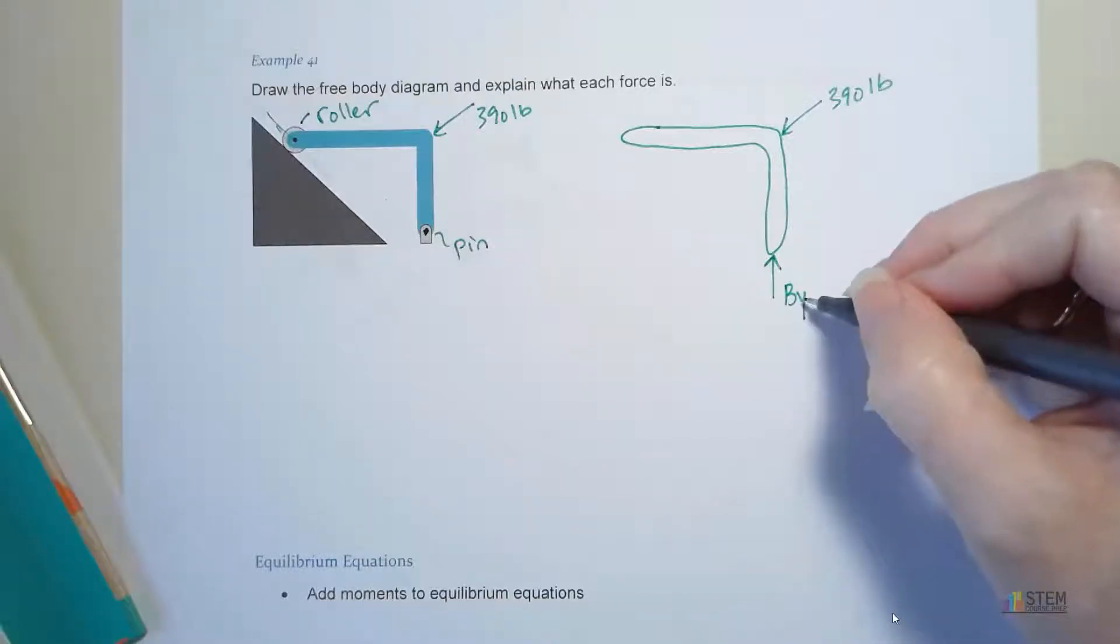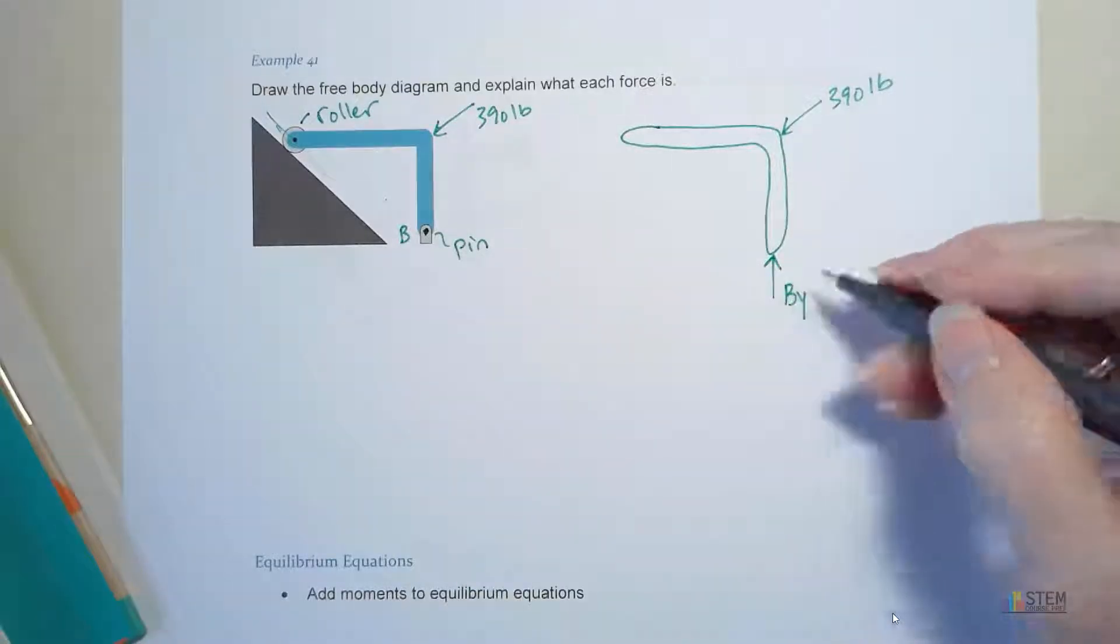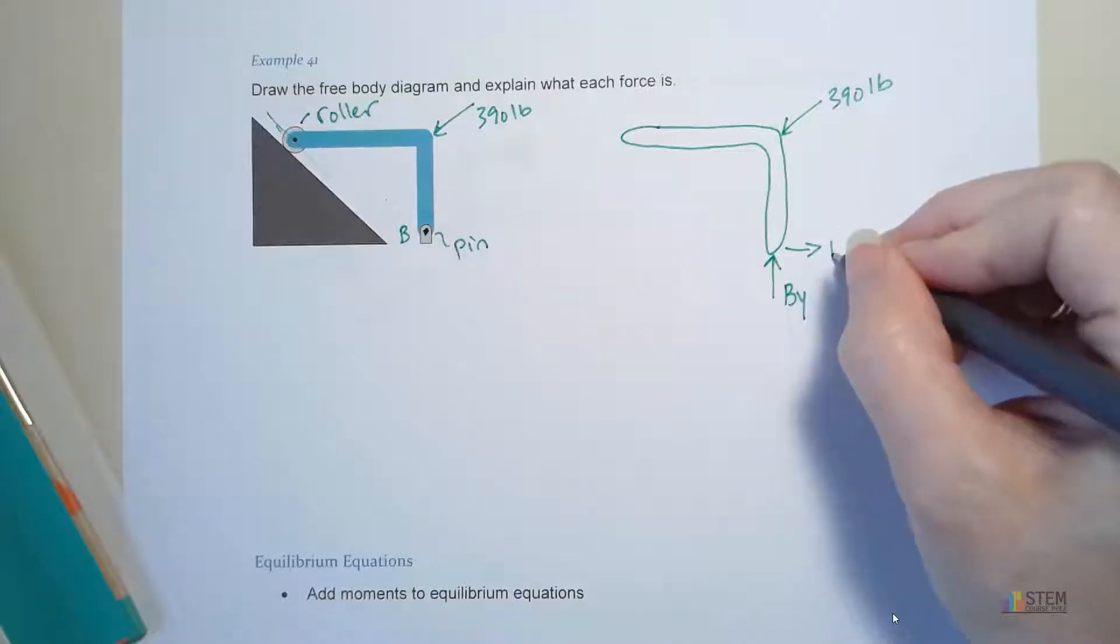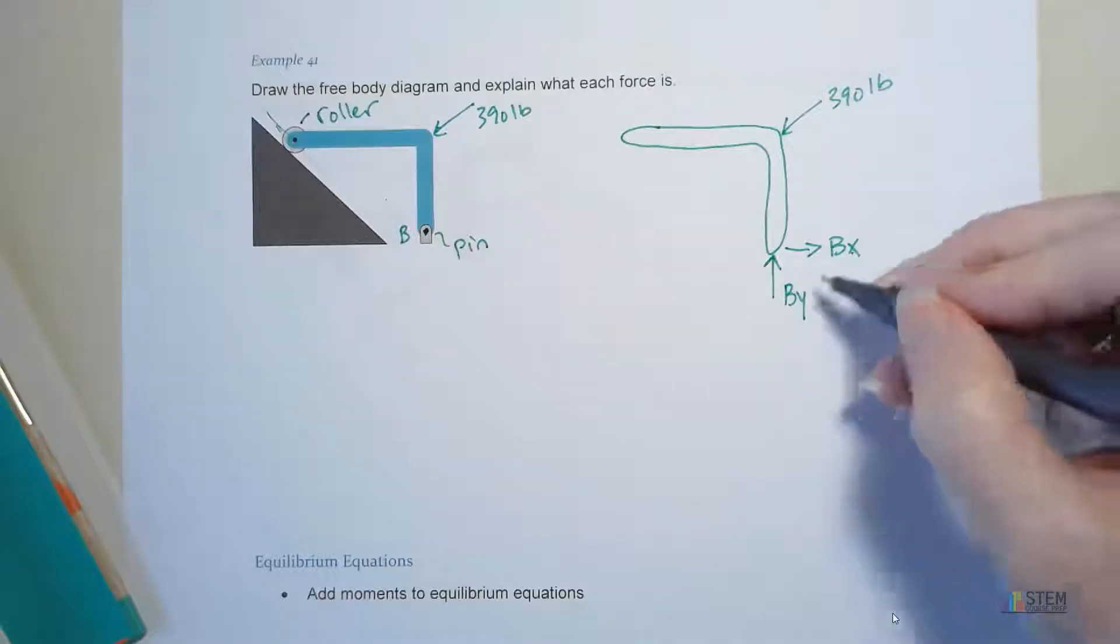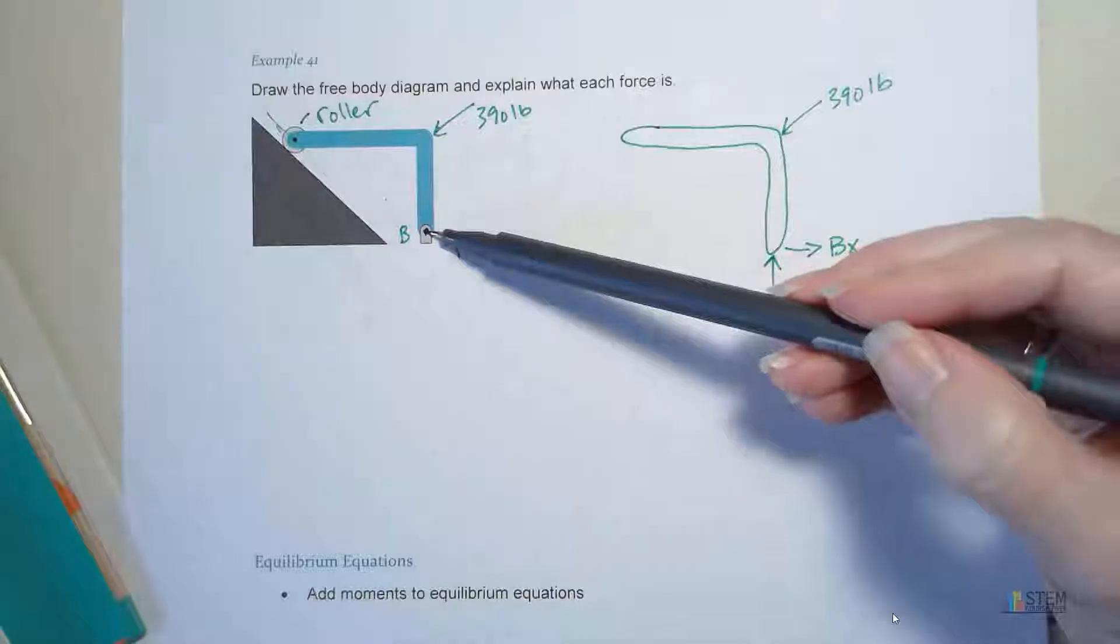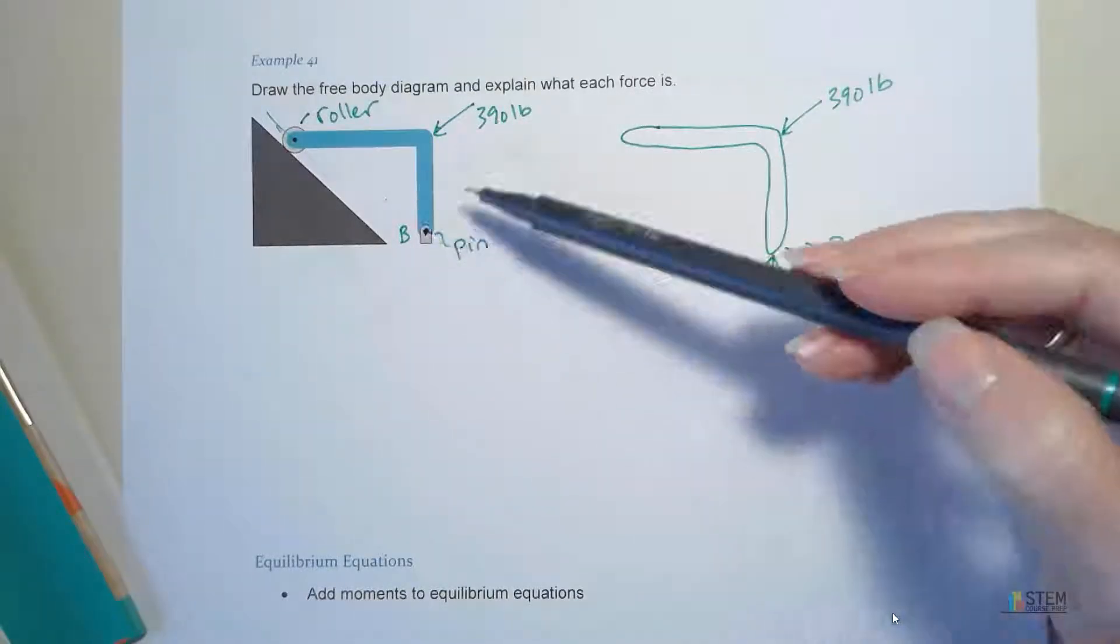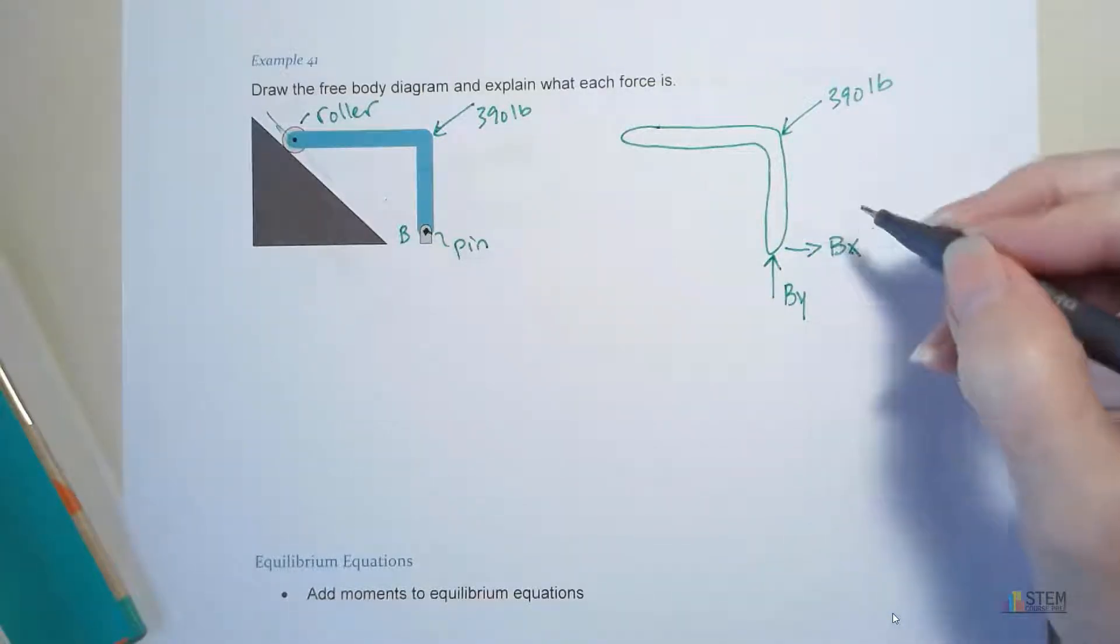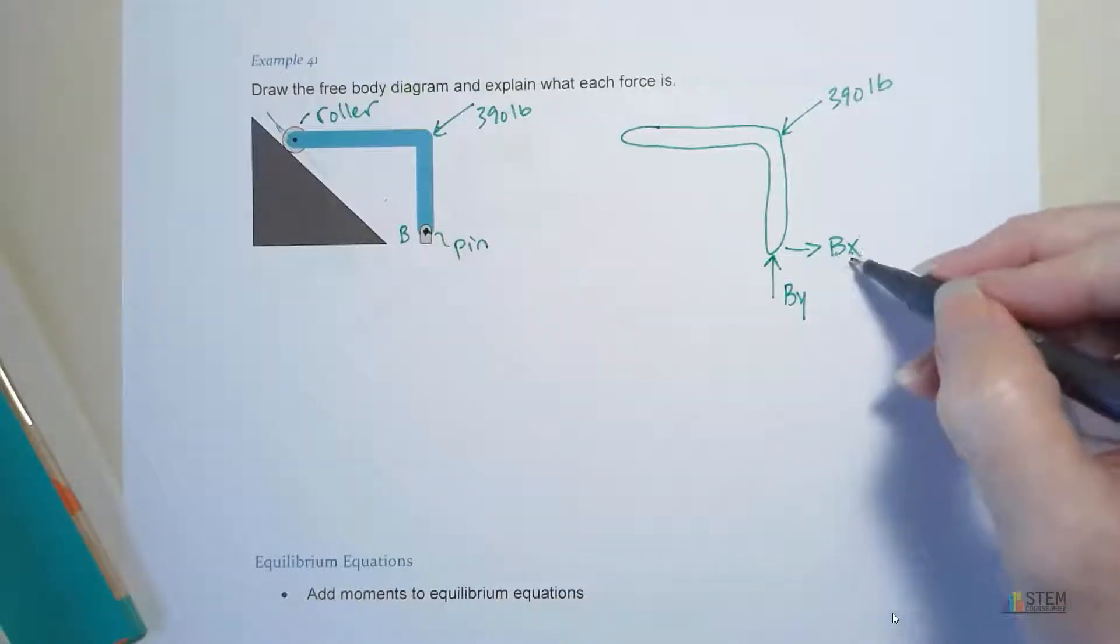So I'm going to call this BY. Let's just call this point B. So that's BY, and then it's also got an X component. So let's just call that BX. So these two forces prevent any sort of translation at this point B. All right. Now, it allows rotation about point B, so we do not need to add a couple moment here, like we had with the fixed support. All right, so just these two forces.